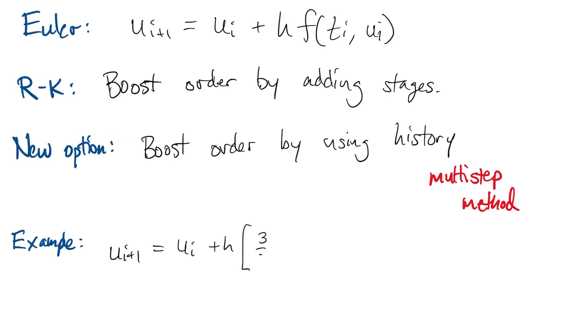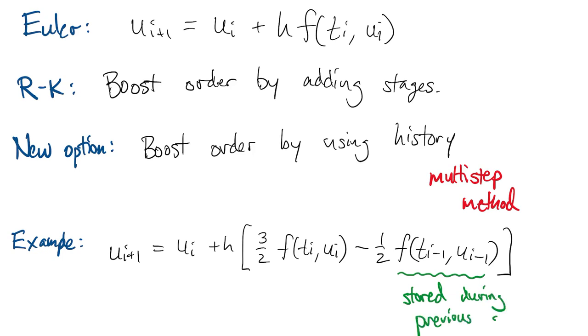For example, we could say ui plus 1 is ui plus a combination of f at time i and f at time i minus 1. This looks like two evaluations of f, but if we're smart, this evaluation of f could have been stored during the previous time step and so we don't have to recompute it.